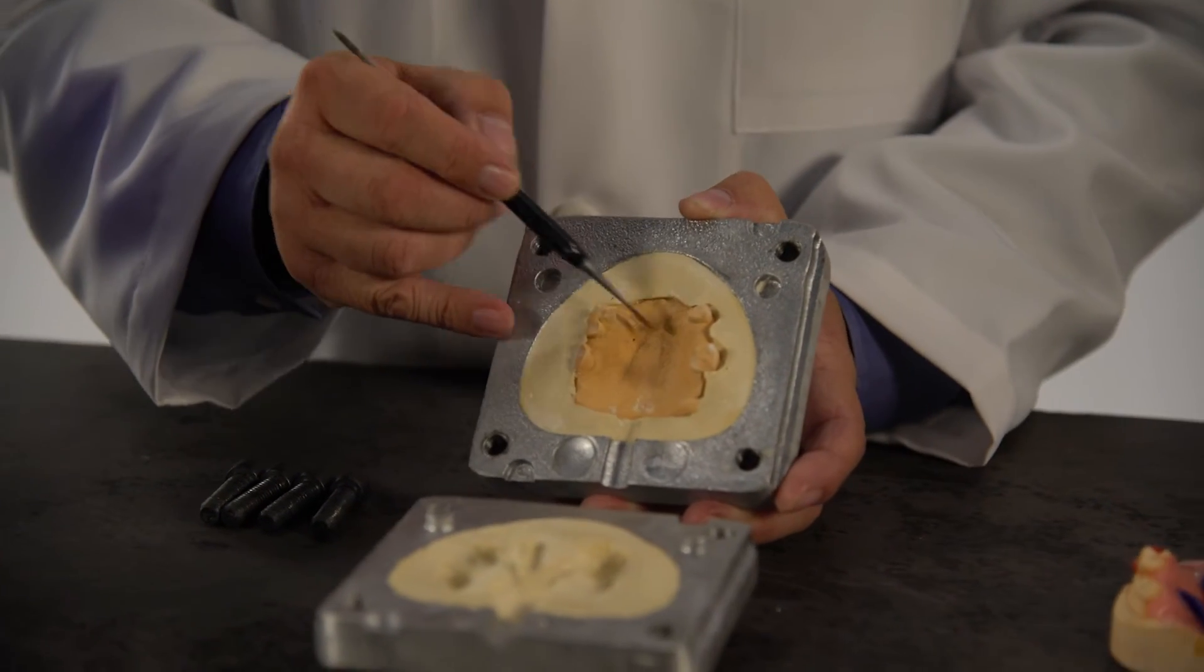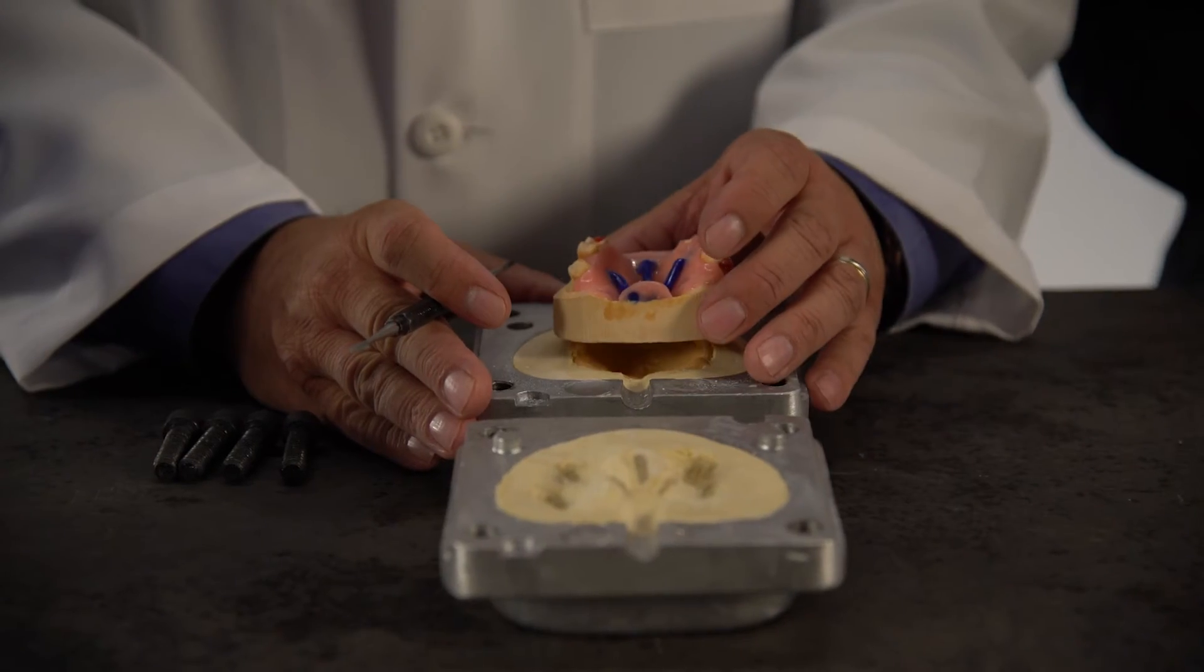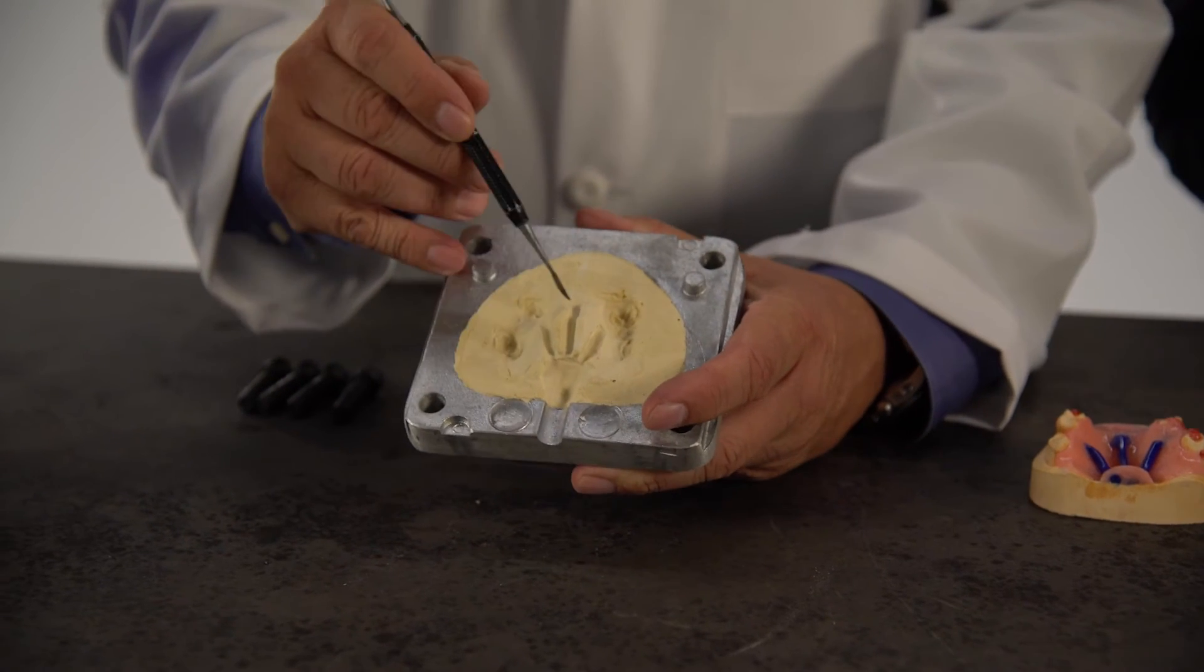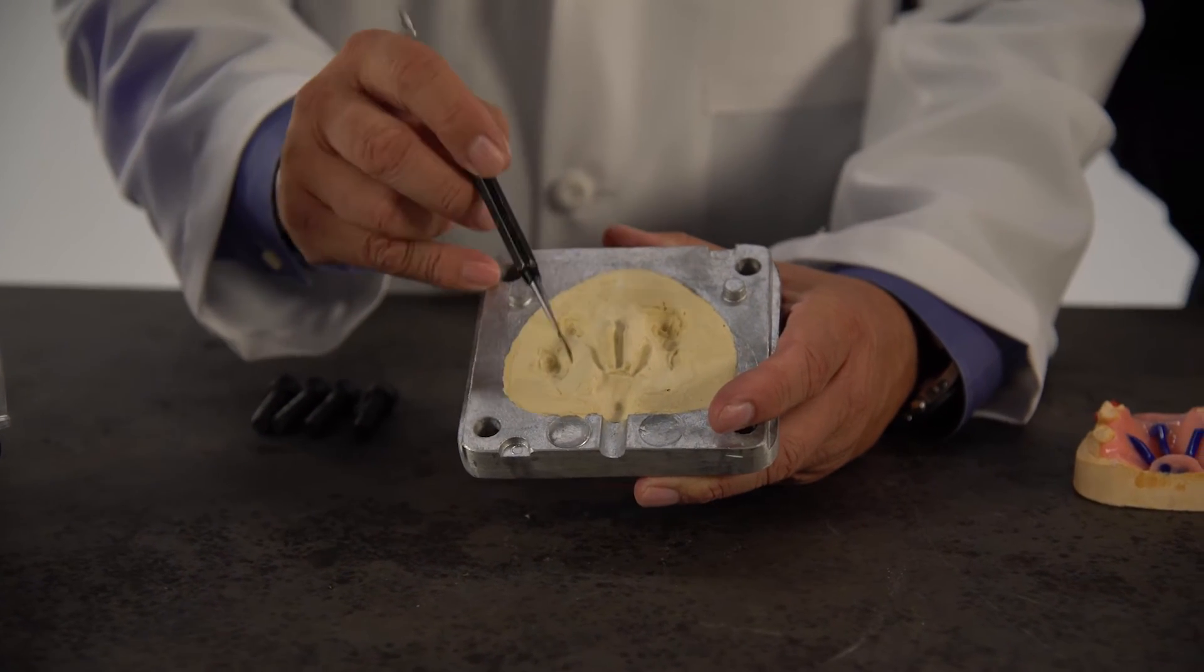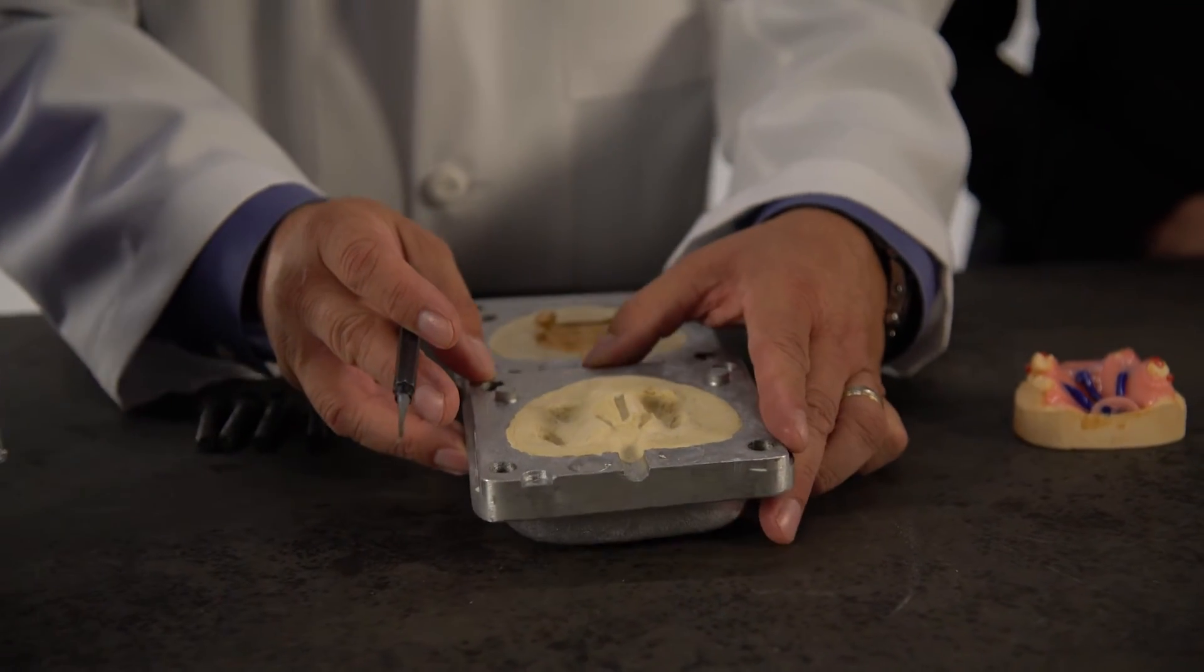You don't need any special gypsum to process clear mat. Apply sprues to the framework and invest model and wax up in the bottom half of the injection flask using type III stone. Usually three sprues are recommended. Add a channel excess sprue in the slotted section of the flask.